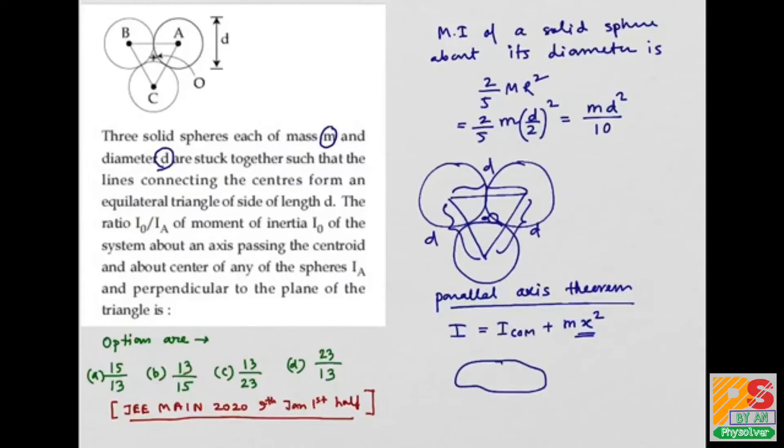Suppose this is the body, this is its center of mass. Moment of inertia of this body about its center of mass is I_COM. And we need to find moment of inertia of the same body about another axis like this, which is parallel to this axis and situated at distance X. Then moment of inertia I equals I_COM plus MX squared, where M is the mass of the body.